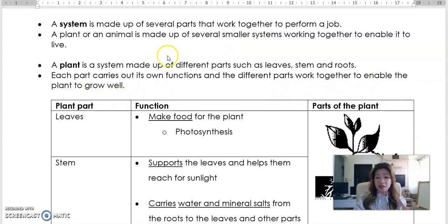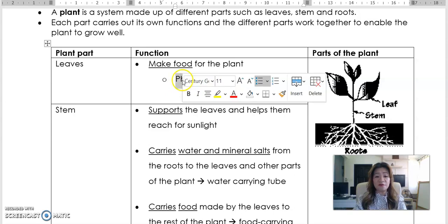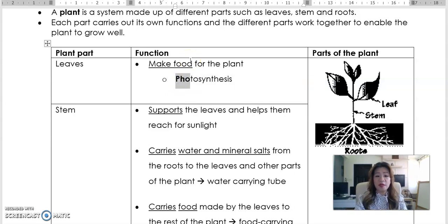A plant is a system made out of different parts such as leaves, stem and roots. That's all we need to know for P3 science. And you need to know each part's function. So each part carries out its own functions and the different parts work together to enable the plant to grow well. So what are the different parts over here that we learned? Leaf, stem and roots. So what does the leaf do? The leaf makes food for the plant in a process called photosynthesis. You will need to learn how to spell this as P-H-O, T-O, S-Y-N, T-H-E, S-I-S. So break up the word into five different syllables, photosynthesis, and you will find it easy to spell.